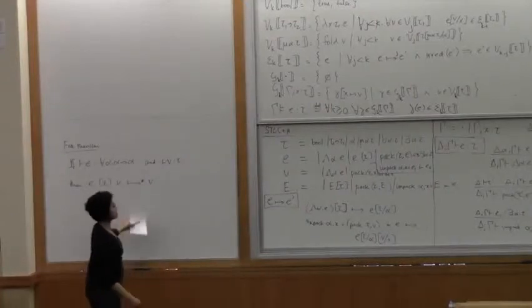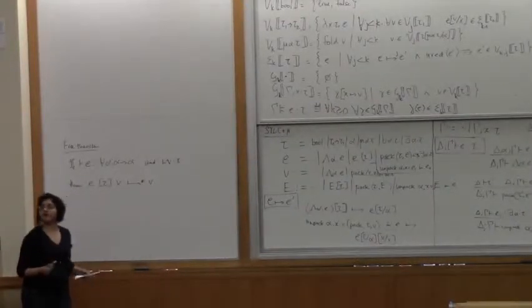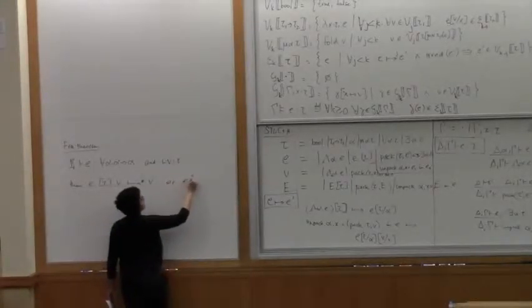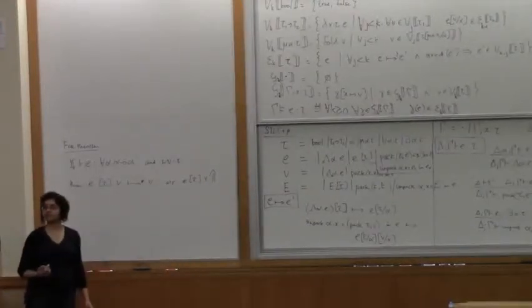We can't say that this always reduces to a value V. So either it reduces to a value V, or E tau V diverges. I'll write that for diverges. It doesn't terminate.